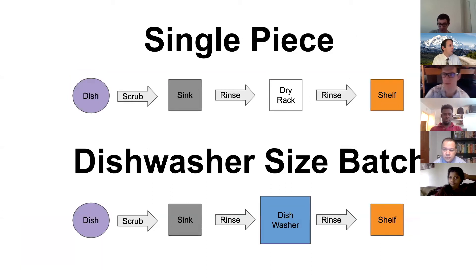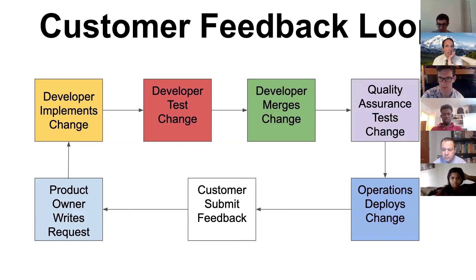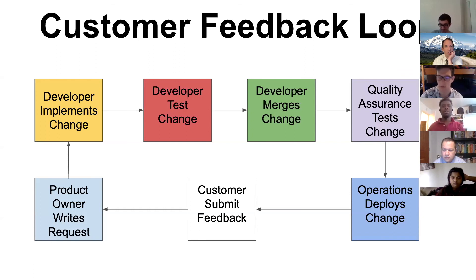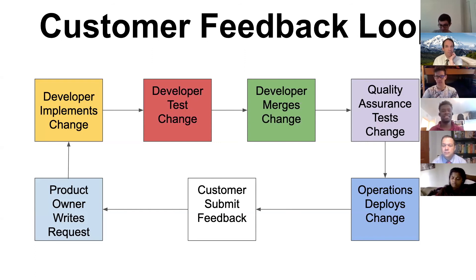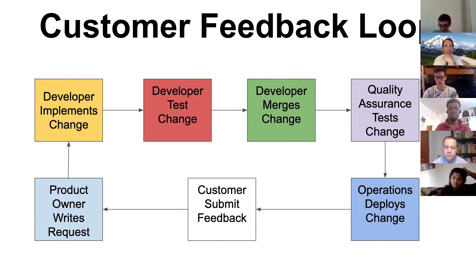Looking back at the workflow page: the developer makes the pull request, quality assurance tests it, and then DevOps implements it. Well, in theory. DevOps is a very ambiguous role — it means something different in almost every company. In classic IT organizations, operations is the one who pushes the change into the live environment.